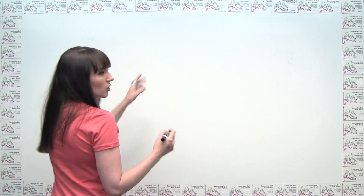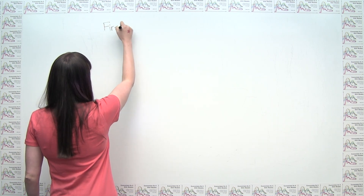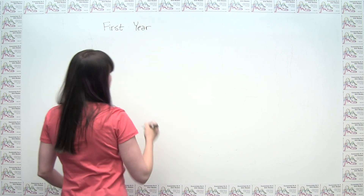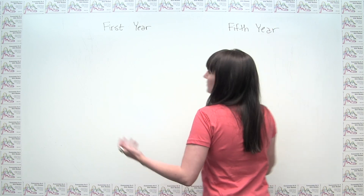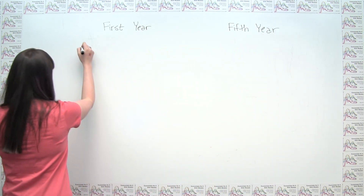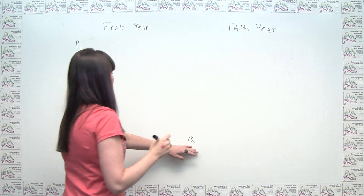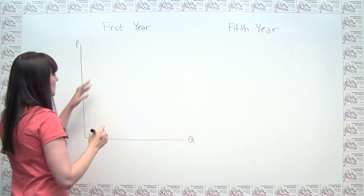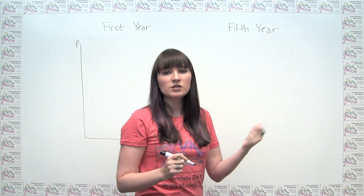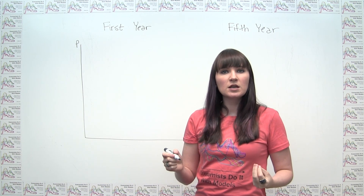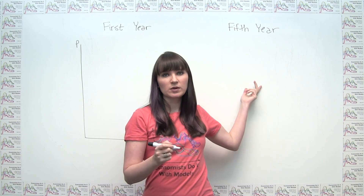To do that, we can start by drawing two diagrams. One shows what the market looks like in the first year, and the other shows what the market looks like in the fifth year. We draw a regular supply and demand for each, with market quantity on the horizontal axis and price on the vertical axis. In the first year, over that shorter time horizon, consumers don't have that many choices or flexibility. So their demand is actually more price inelastic than it will be over a longer time horizon.